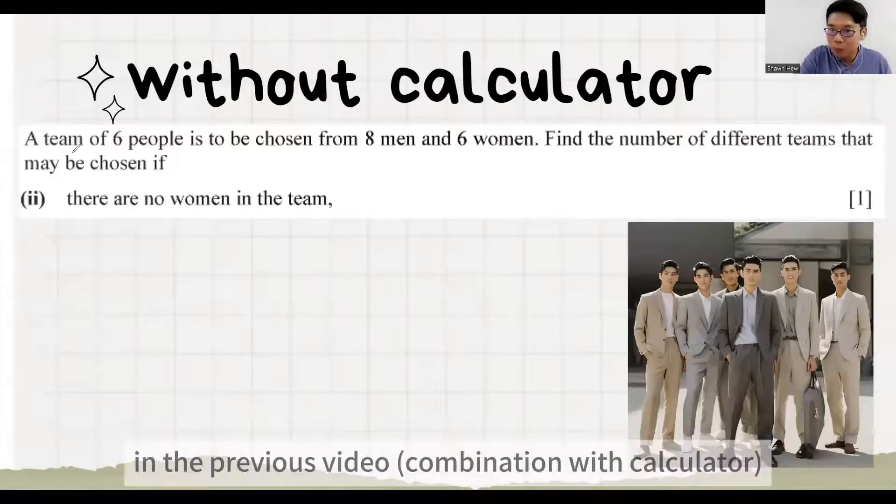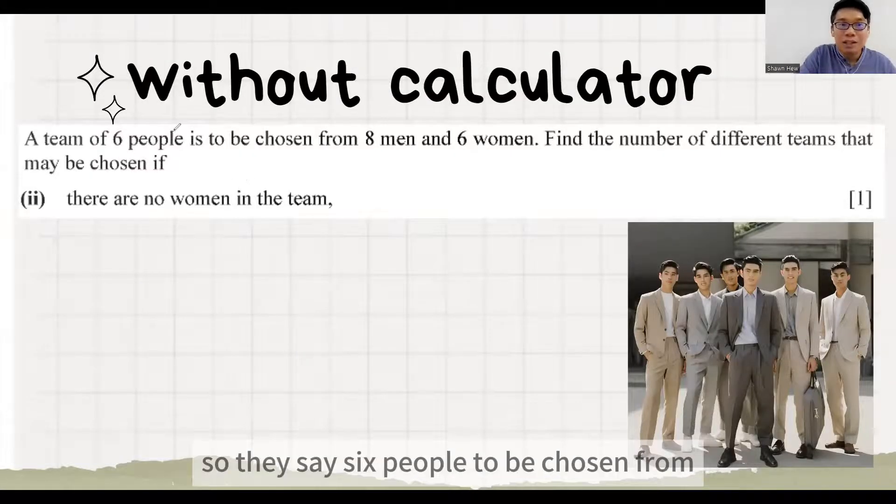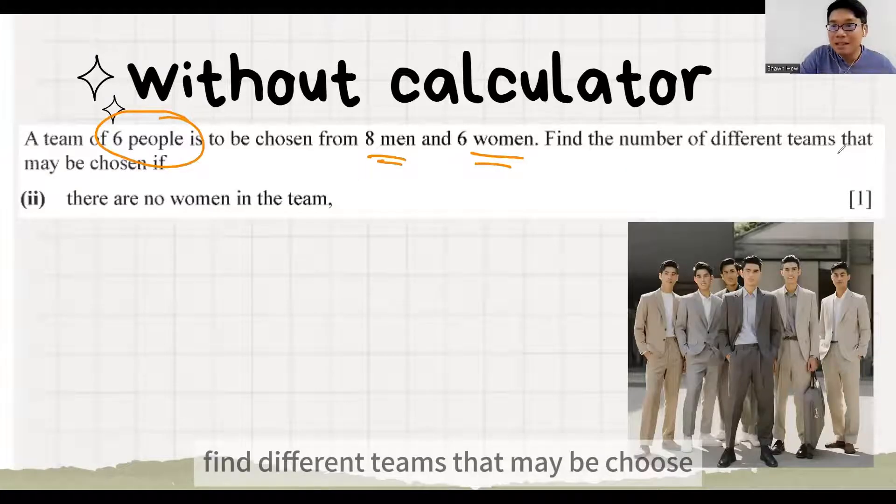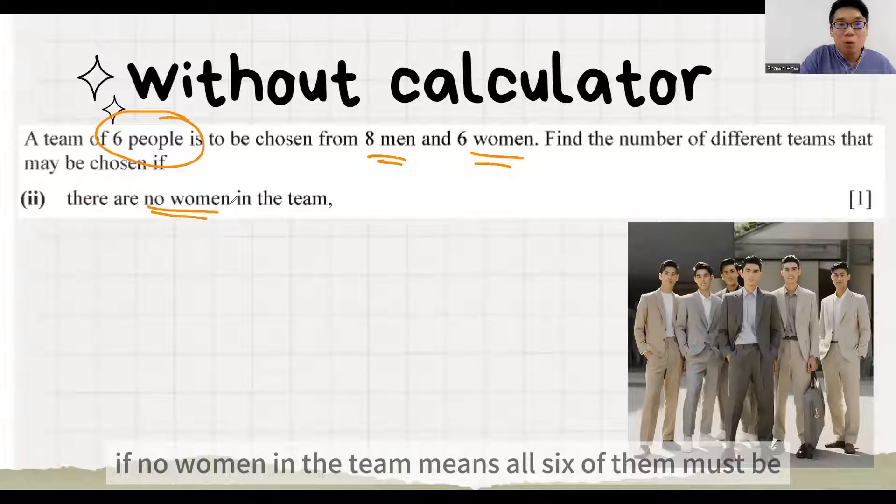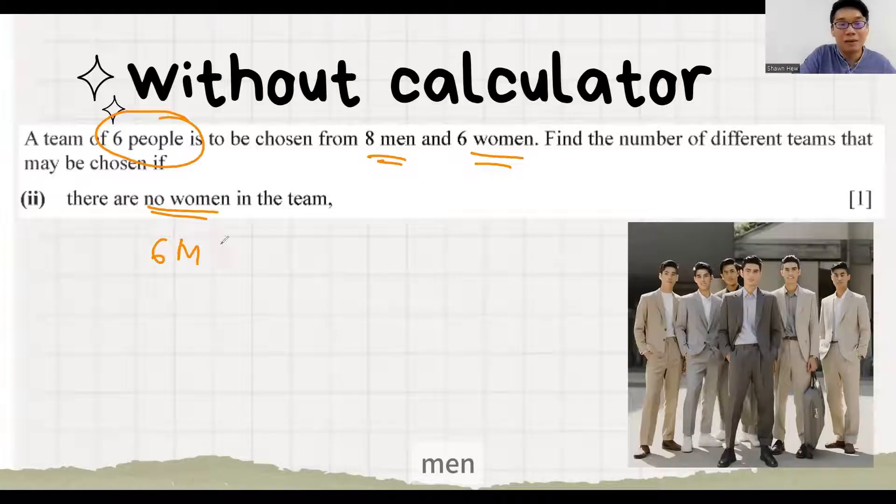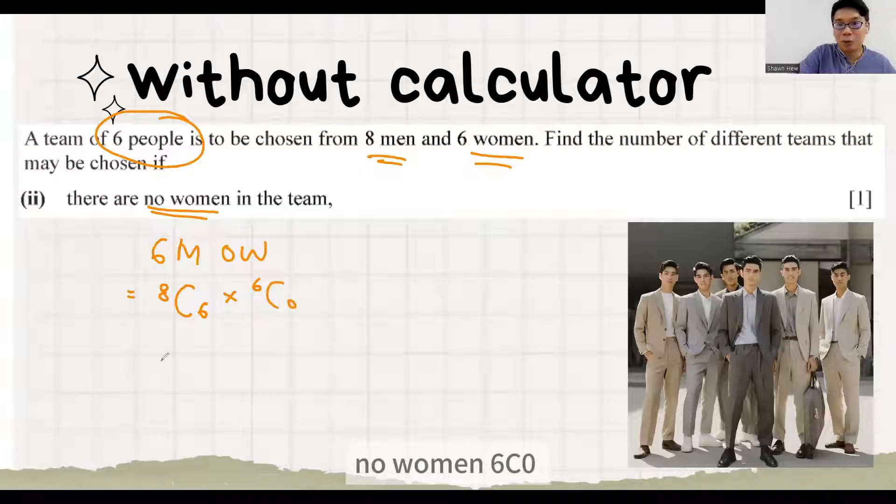In the previous video that we learned about how to do this combination. So they say 6 people to be chosen from 8 men and 6 women. Find different teams that may be chosen if no women in the team. If no women in the team means all 6 of them must be men. 6 men, no women. So 6 men means 8C6. And then no women, 6C0.